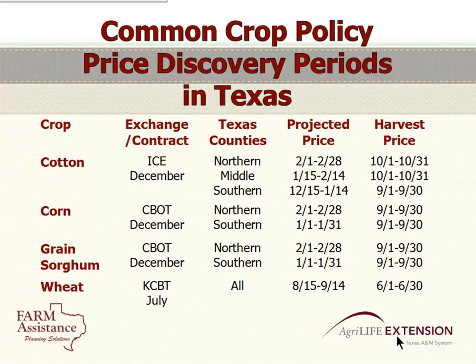For grain sorghum, northern counties use the month of February, southern counties the month of January, and harvest price for both is the month of September. Wheat uses the July Kansas City Board of Trade contract. The projected price is set from August 15th to September 14th, and the harvest price is set in the month of June.